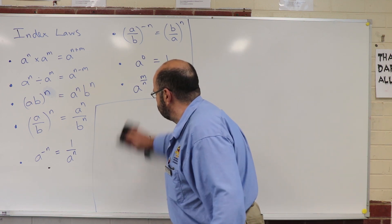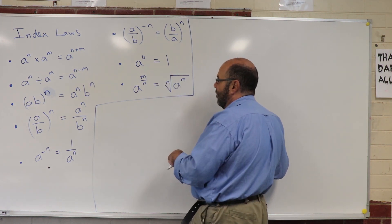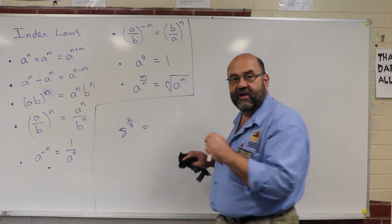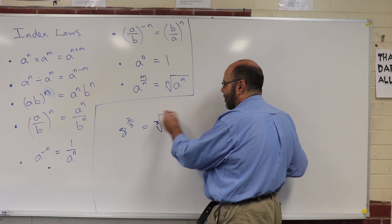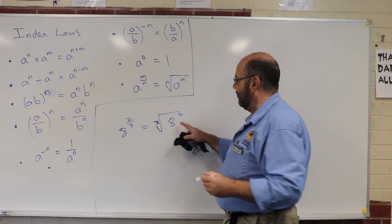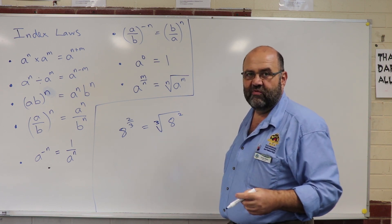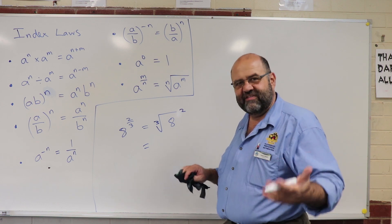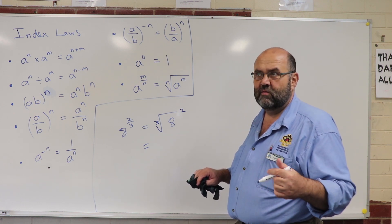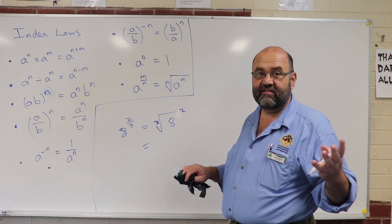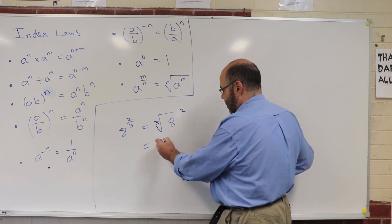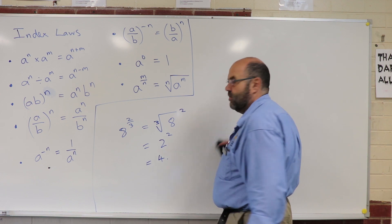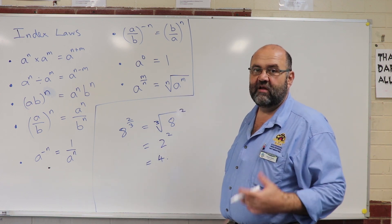The last one: if I've got a fractional power — say 8 to the power of 2 thirds — the denominator says I want the cube root of 8, then raise it to the power of 2. I'll get the cube root first then square it. What number multiplied by itself 3 times gives me 8? That's 2, because 2 times 2 times 2 is 8. So the cube root of 8 is 2. Then 2 squared is 4. Don't panic — we're going to see more of this further down the track.